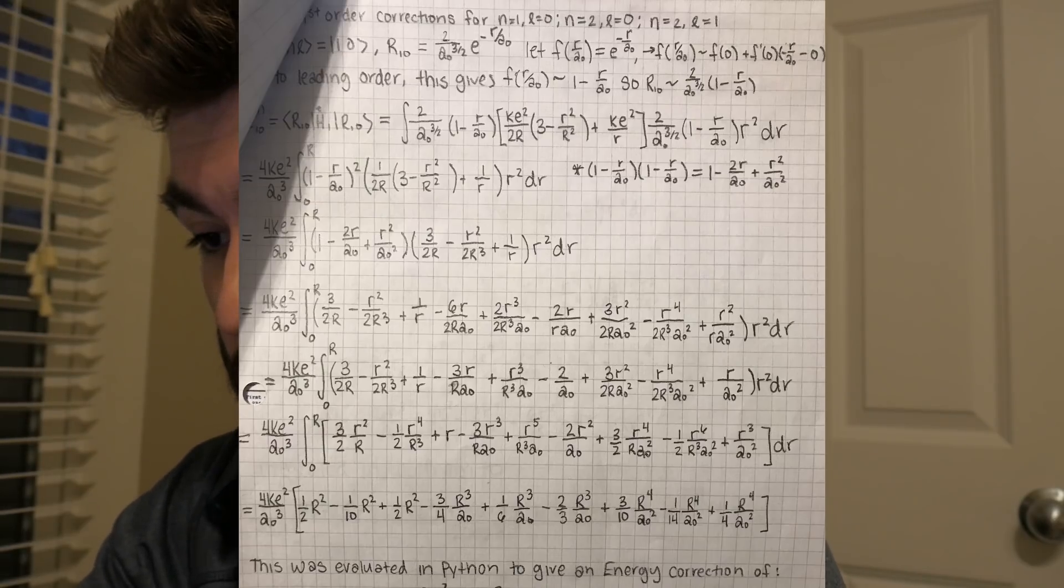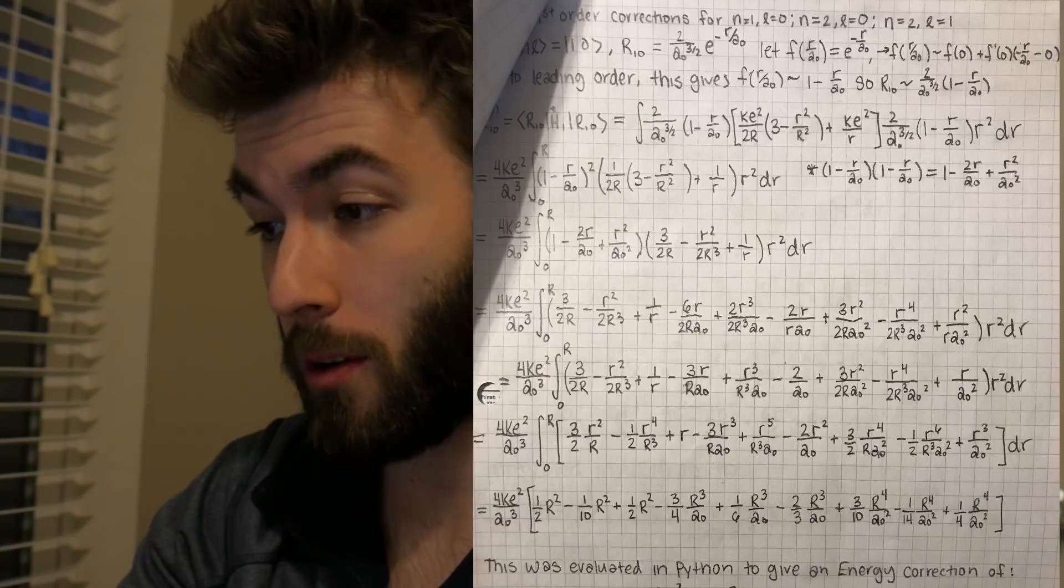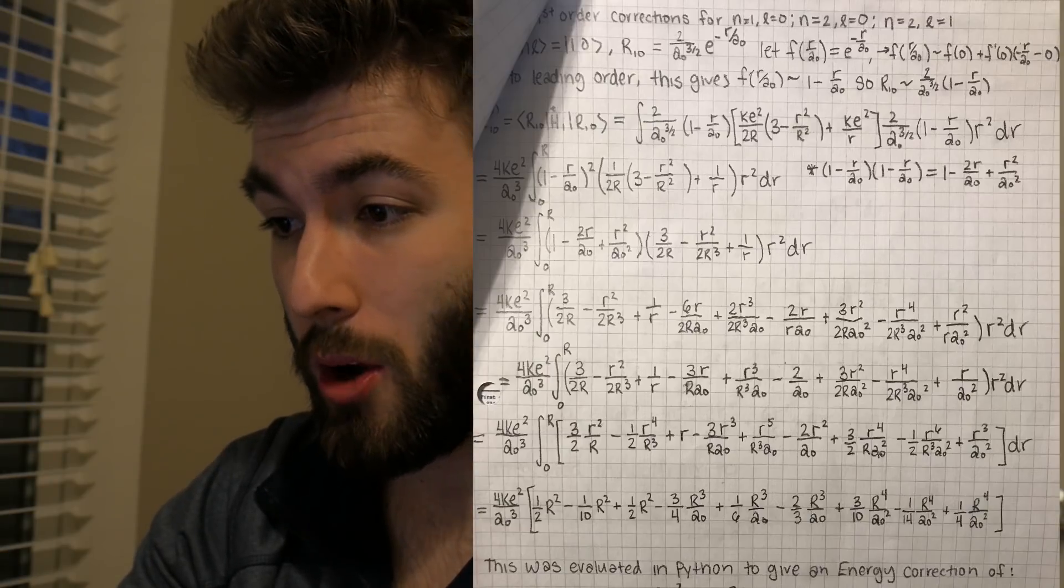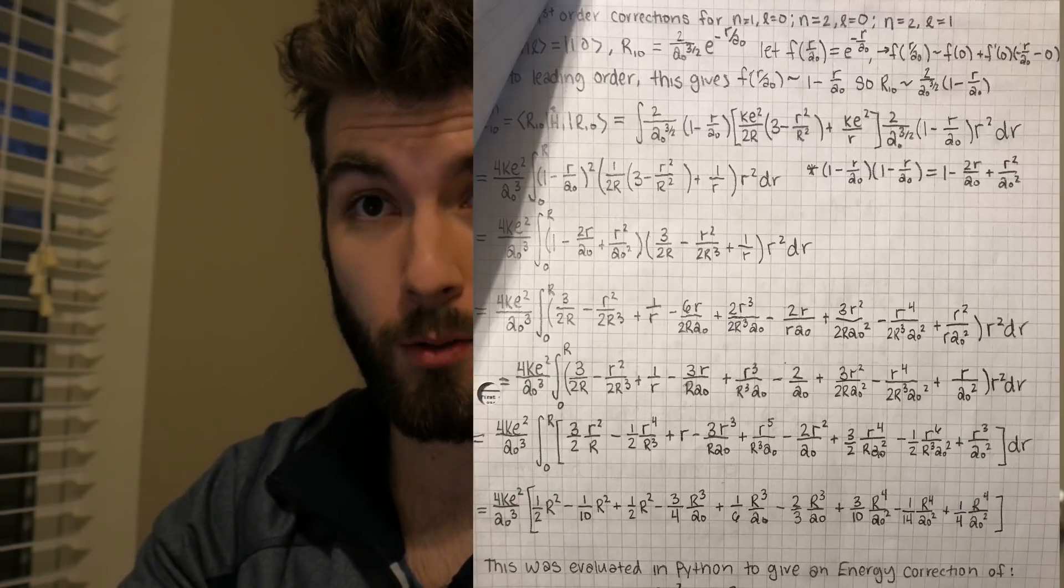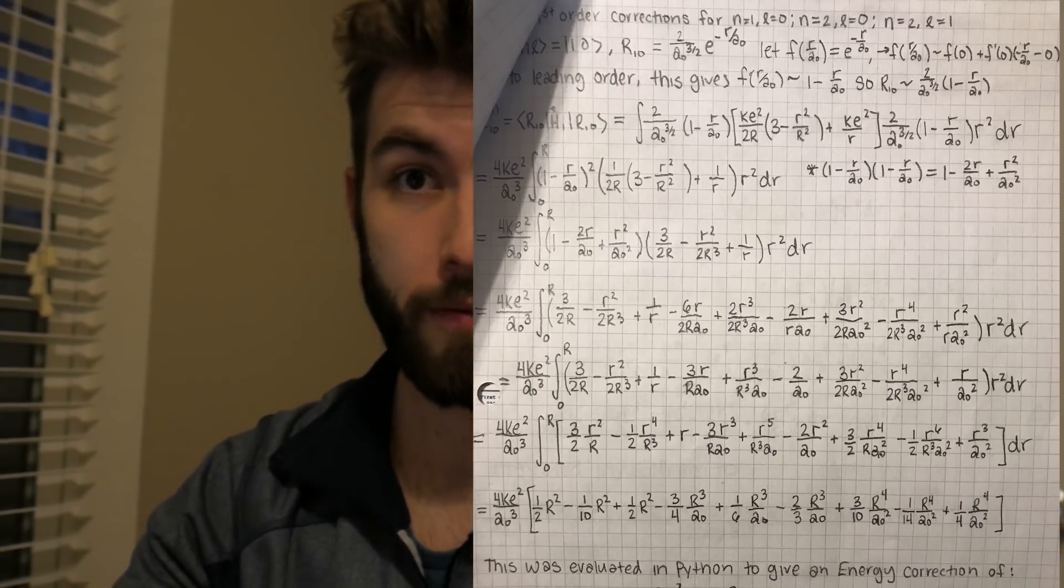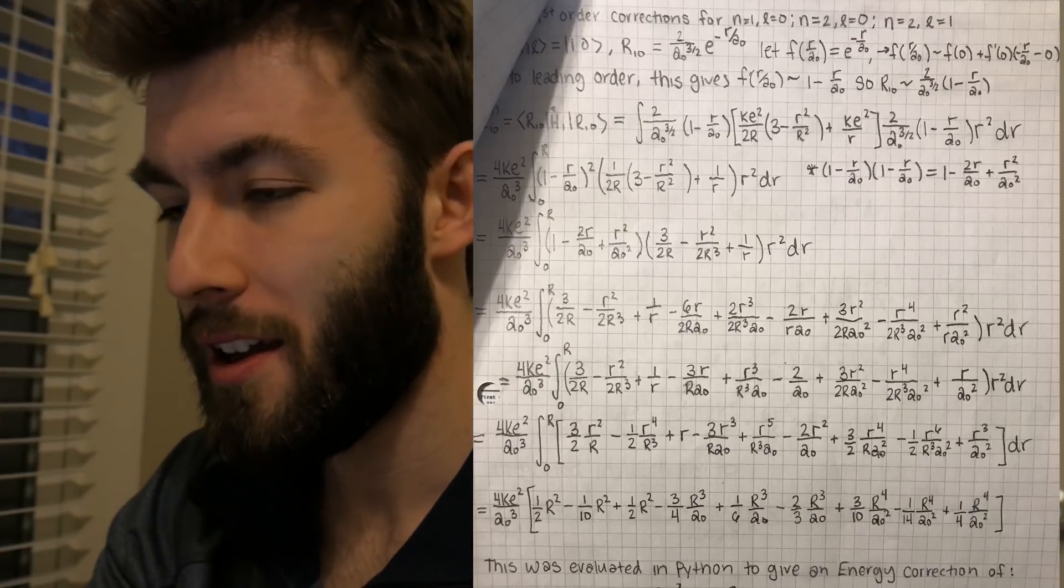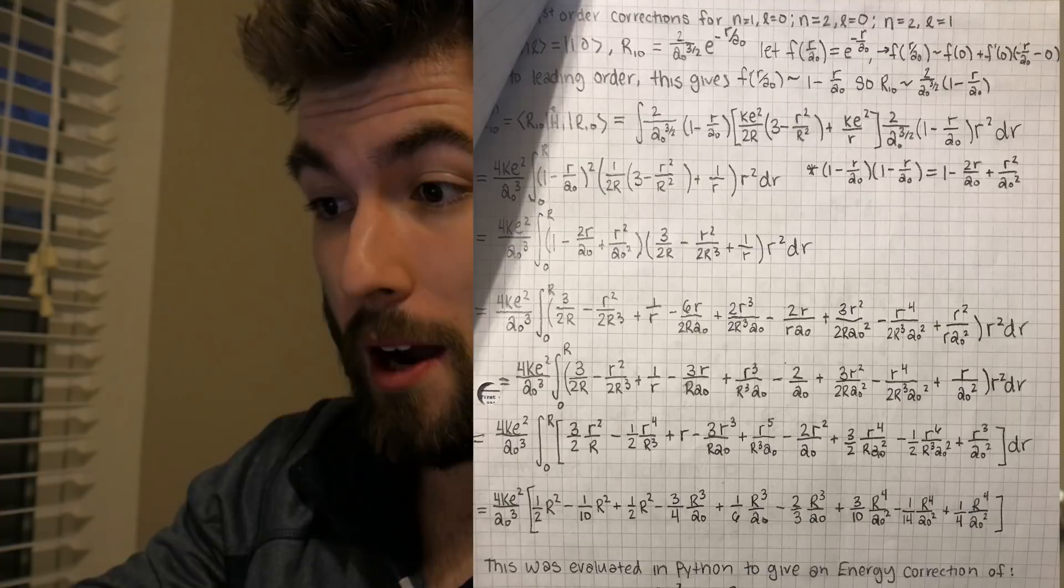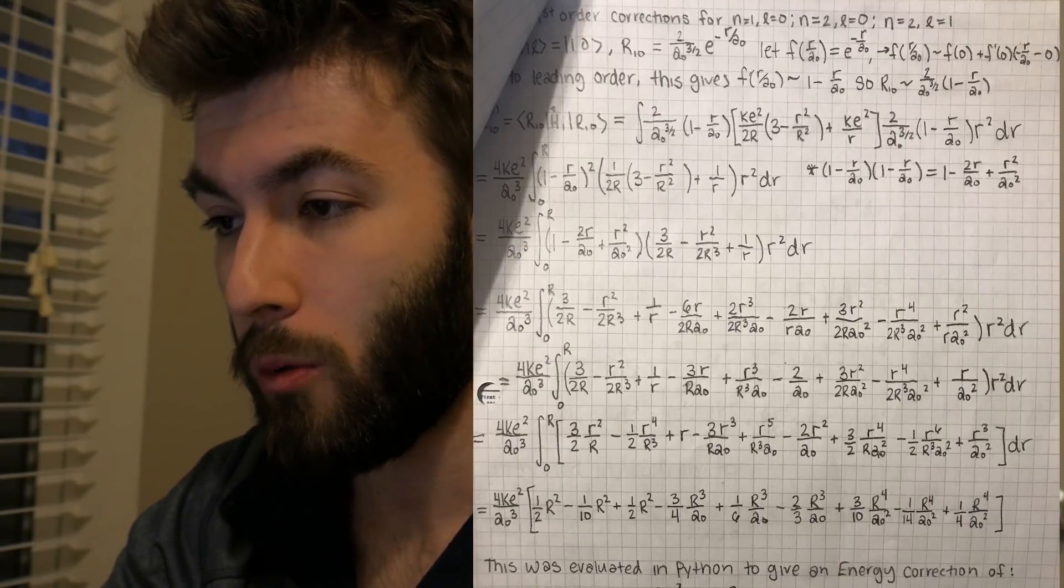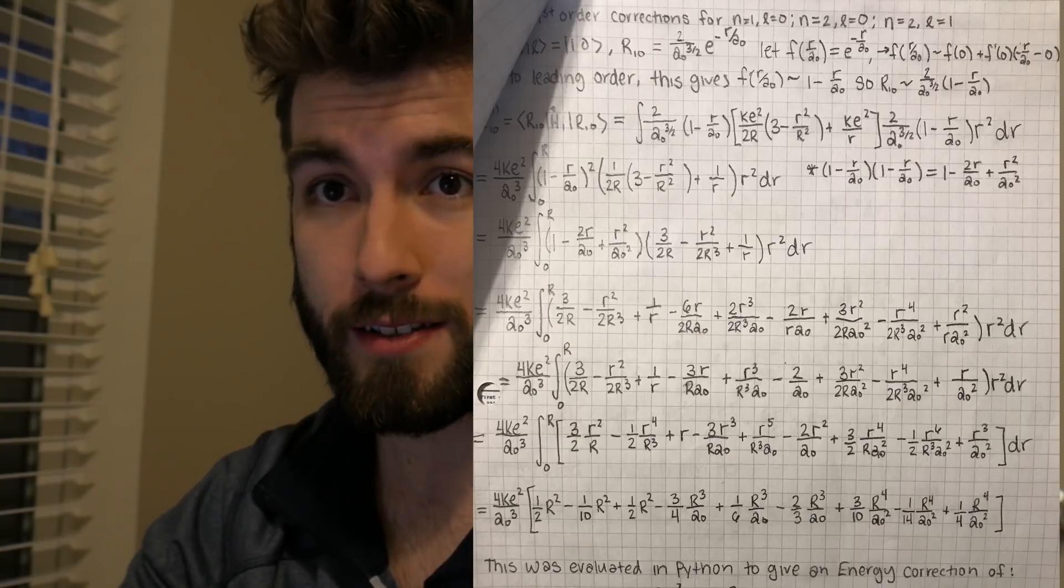Now, where this Taylor series thing gets useful is that we're integrating over three space, okay, we're integrating in spherical coordinates, which tells you that there's going to be an R squared, a factor of R squared, at least in all of these terms, because in spherical coordinates, you have R squared sine theta. So that means that at the very least you have an R squared being multiplied by this E to the minus R over A zero, which implies that you would have to use integration by parts at least twice for each of these.